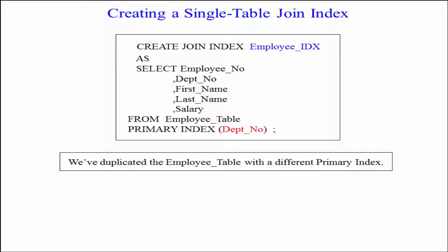But I'm giving it a different primary index. The real table has employee number as the primary index, as a UPI, unique primary index. But this has department number as the primary index.